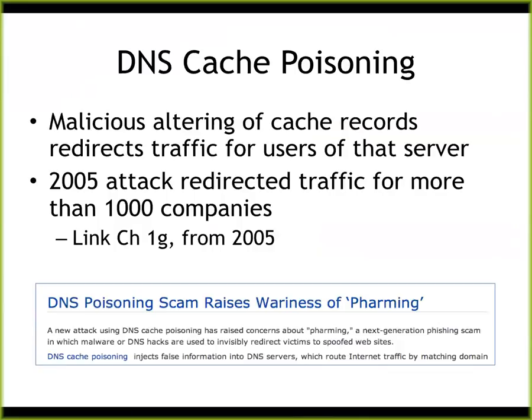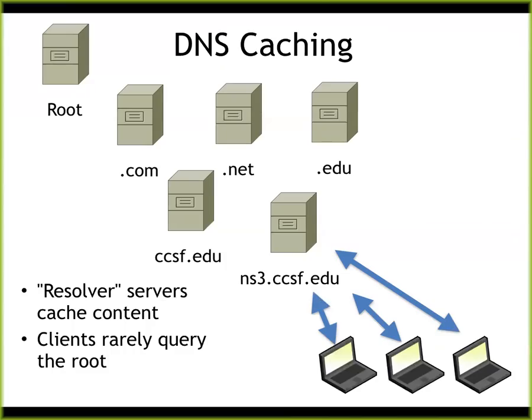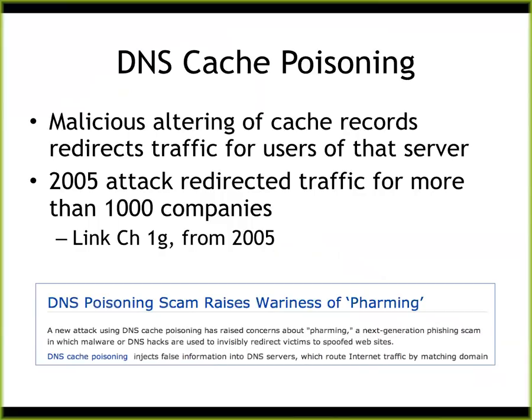Cache poisoning is one way. You already know phishing — where you send people an email with a link that looks like their bank but isn't. But you could poison the Comcast DNS resolver with the wrong IP address for the bank site, and now all the customers who did not click on a link and don't have any malware will still go to the wrong page and give you their credit card numbers. That's a pharming attack — where phishing is clicking a link, pharming is planting seeds by poisoning the cache on a server.